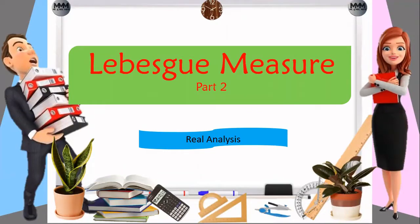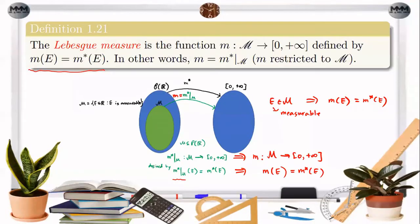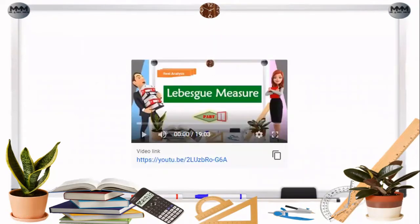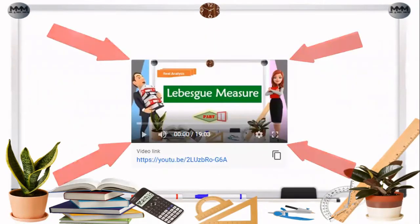Good day everyone. This video is a continuation of the uploaded video about Lebesgue measure. Recall that Lebesgue measure is a function m obtained from Lebesgue's outer measure m star, where the domain is restricted to all measurable sets, that is script M. For a detailed discussion of this function, please watch that video — you may click the link below.